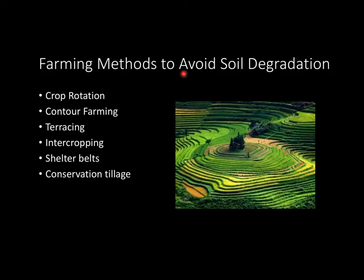Now let's look at farming methods that help avoid soil degradation. First is crop rotation — say one year I grow corn in half of my farm and eggplant on the other half. The following year, I would plant the eggplant where I had the corn, and vice versa. This adds nutrients back to the soil and keeps it healthy. Next is contour farming, which reduces erosion. Terracing is a similar idea — it also helps reduce erosion by layering crops at different levels.